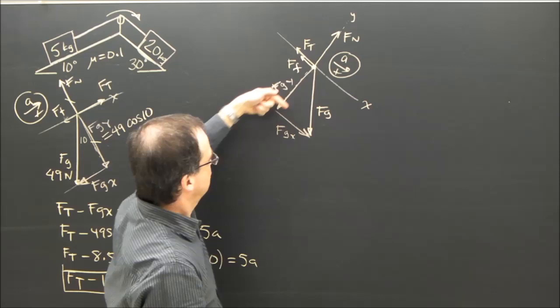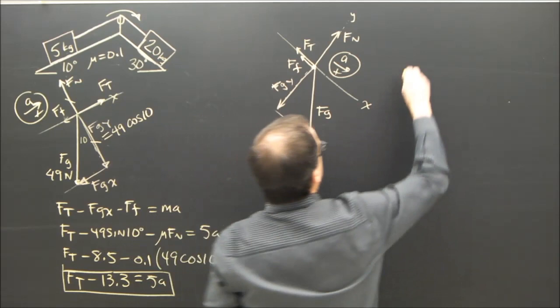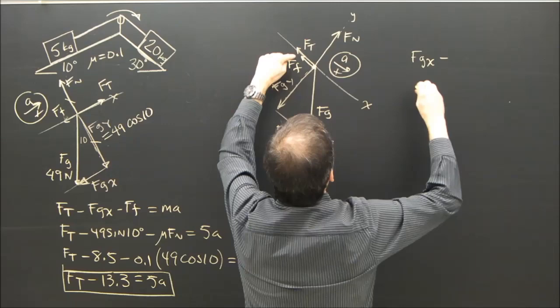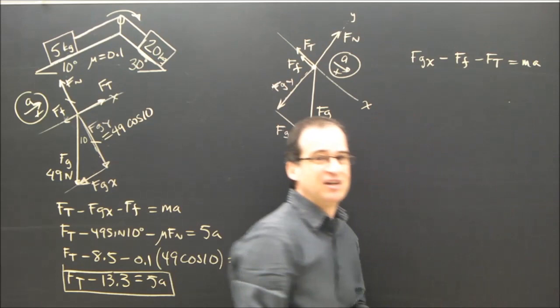So what are the important forces? In this direction, I've got fg, x. That's causing the box to go down the hill. And holding it back, I've got ft and force of friction. So let me come up with the equation for that. The equation is fg, x, forward, minus force of friction, which is negative because that way is positive, so it's negative, minus ft equals ma. There's the equation that defines that.